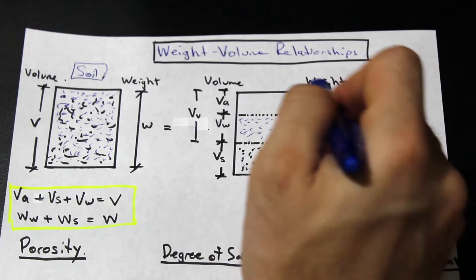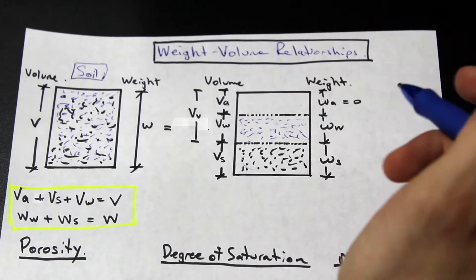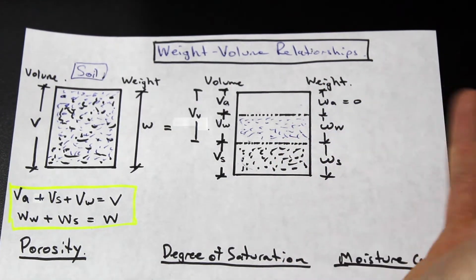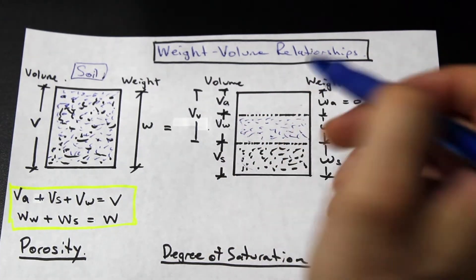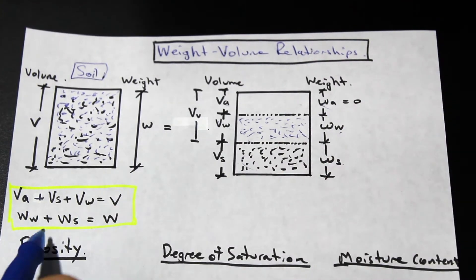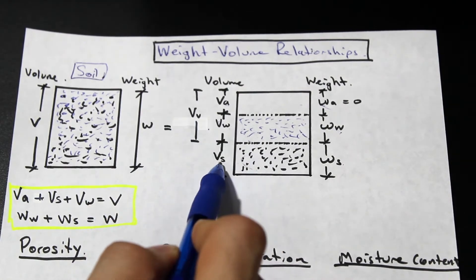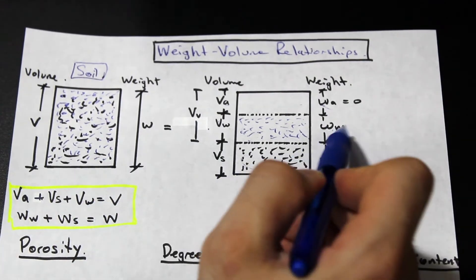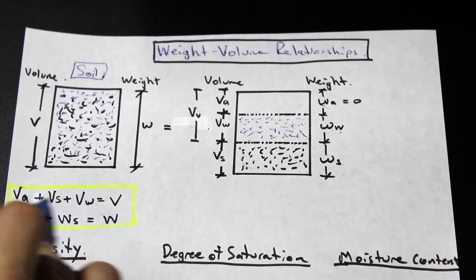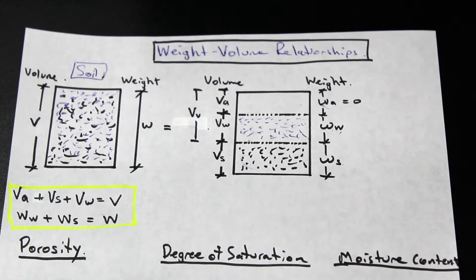If we take a look at the weight: the weight is simply the mass multiplied by gamma water, or 9.81, which is essentially the value for gravity. The weight of air is equal to zero, because air weighs practically nothing — in soils we always consider the weight of air to be negligible. Then we have the weight of the water and the weight of the solids. The volume of air plus volume of water plus volume of solids equals total volume, and weight of water plus weight of solids equals total weight. These are important relationships you'll often need to solve for.